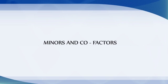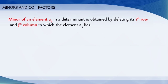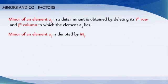Minors and cofactors. The minor of an element aij of a determinant is the determinant obtained by deleting its ith row and jth column in which the element aij lies. The minor of an element aij is denoted by capital Mij.